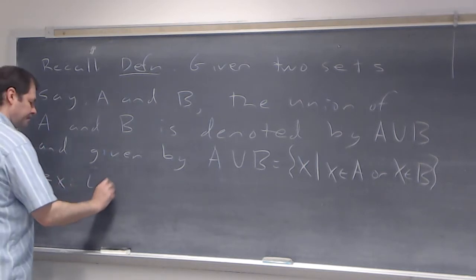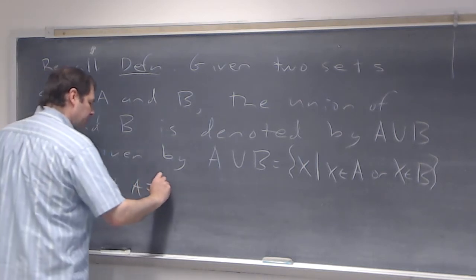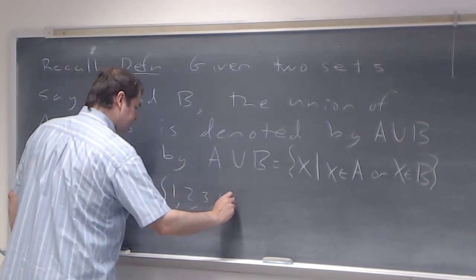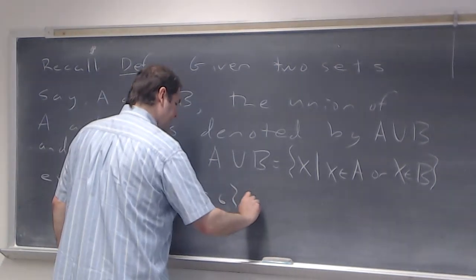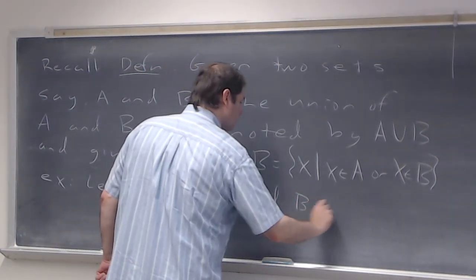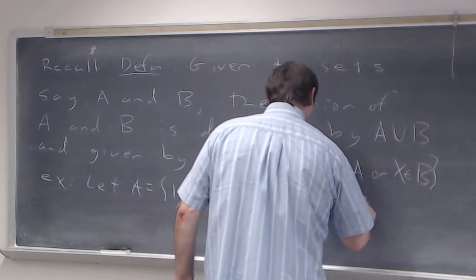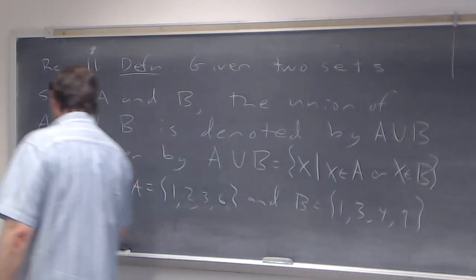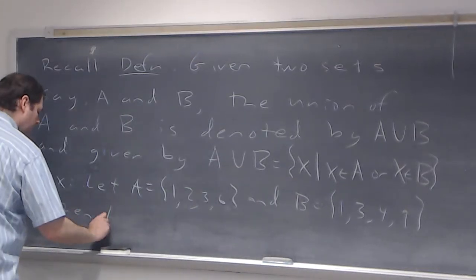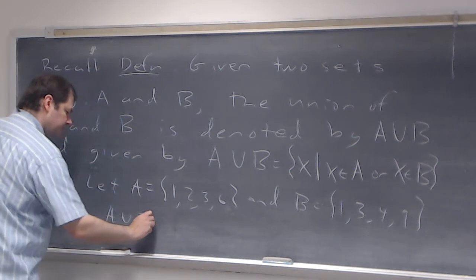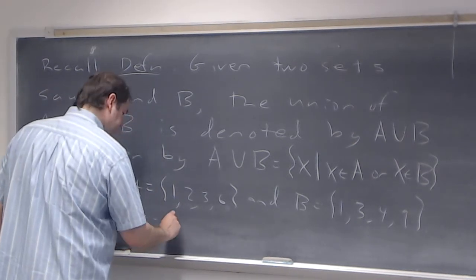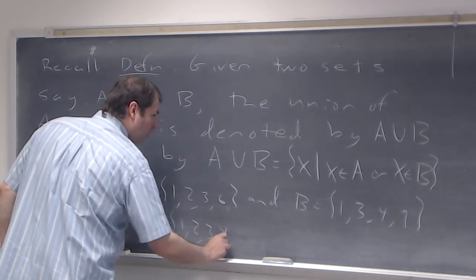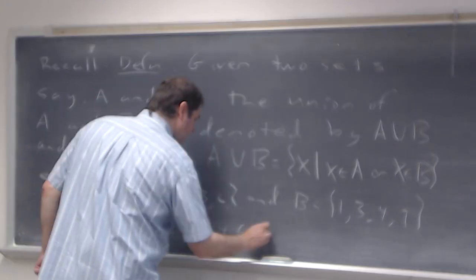If you let A be equal to {1, 2, 3, 6} and B be equal to {1, 3, 4, 9}, then A union B is equal to {1, 2, 3, 4, 6, 9}.